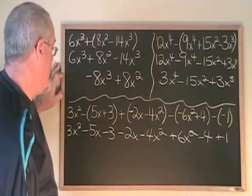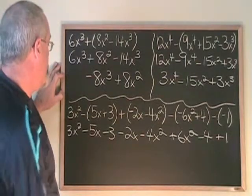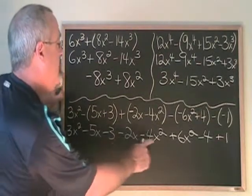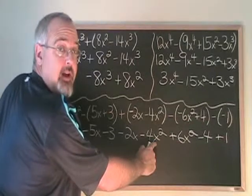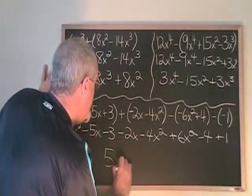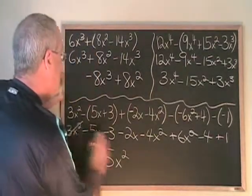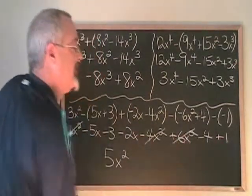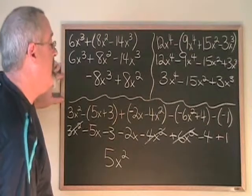Now we just have to combine similar terms. For the x² terms, we have 3x² minus 4x², which is negative 1x², plus 6x² equals positive 5x². We can cross out the x² terms so we don't get mixed up with them later.